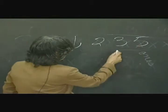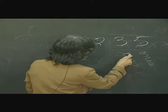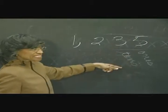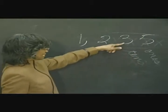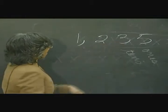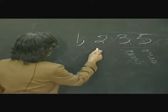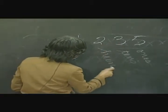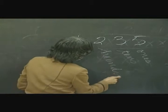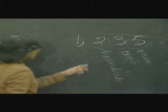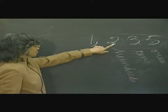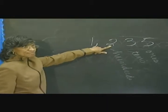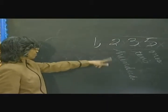We have the tens place next. The digit in the tens place means we have three tens. Then we have the hundreds place. The digit in the hundreds place is two. This means we have two hundreds.